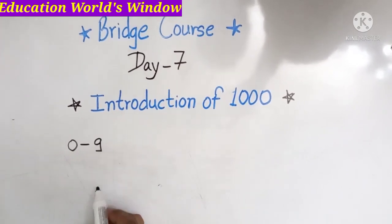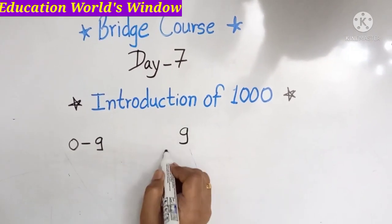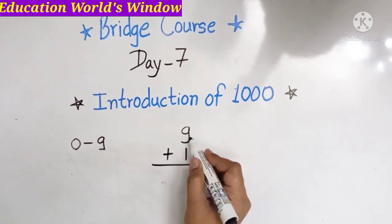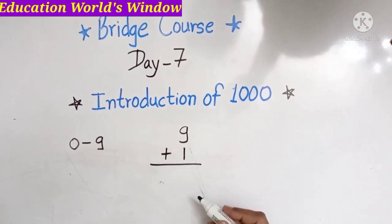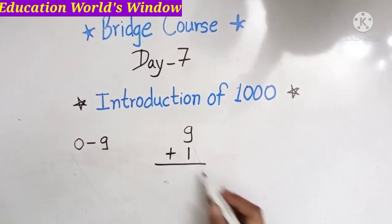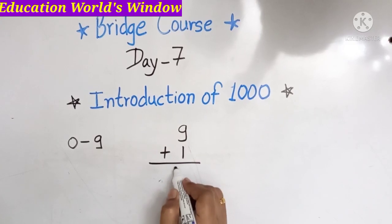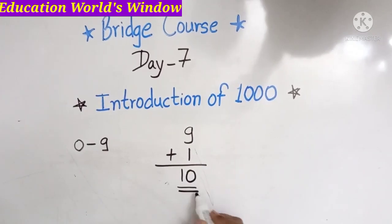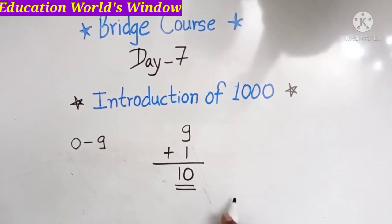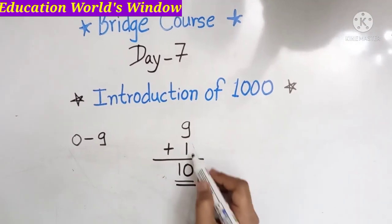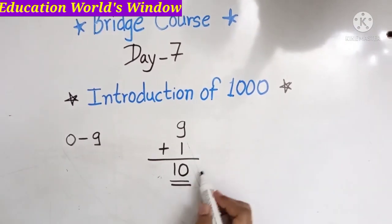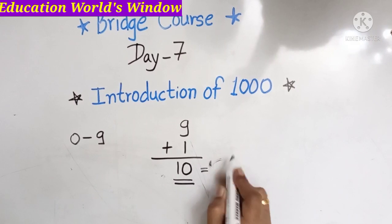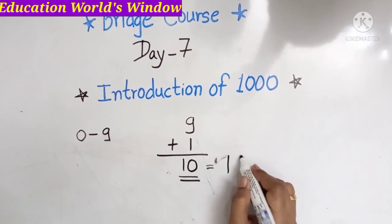When we add 1 to 9, what is 9 plus 1? It is 10. This is a 2-digit number. 9 plus 1 gives us 10, which means 1 ten.